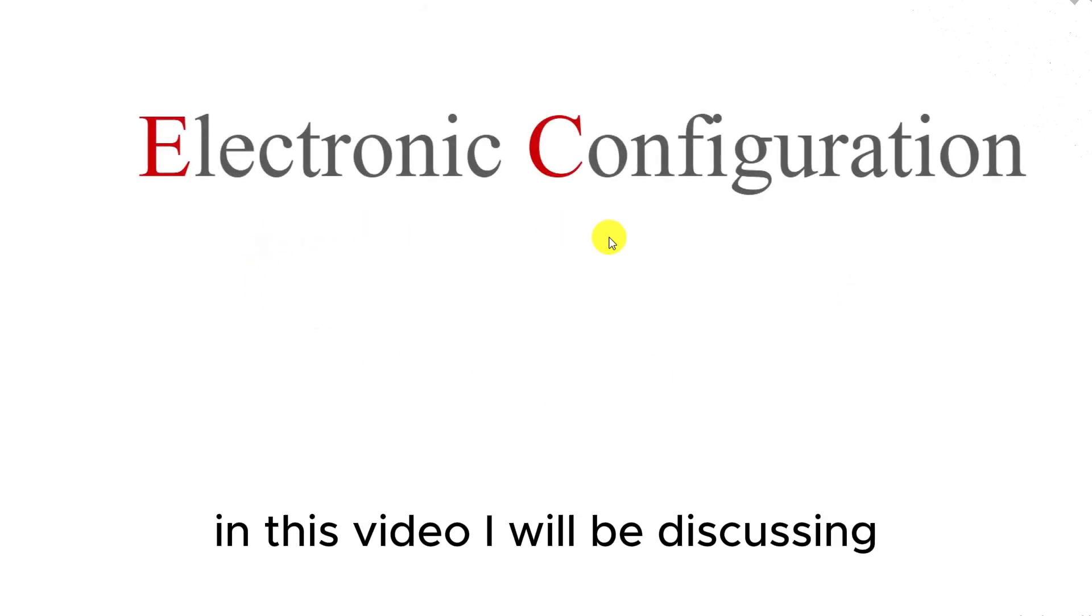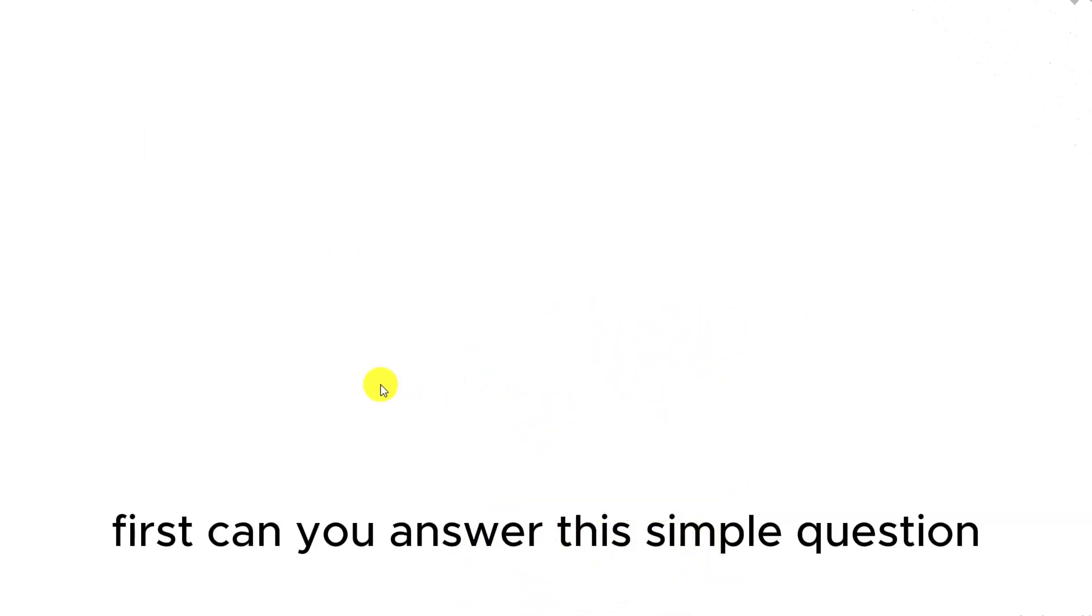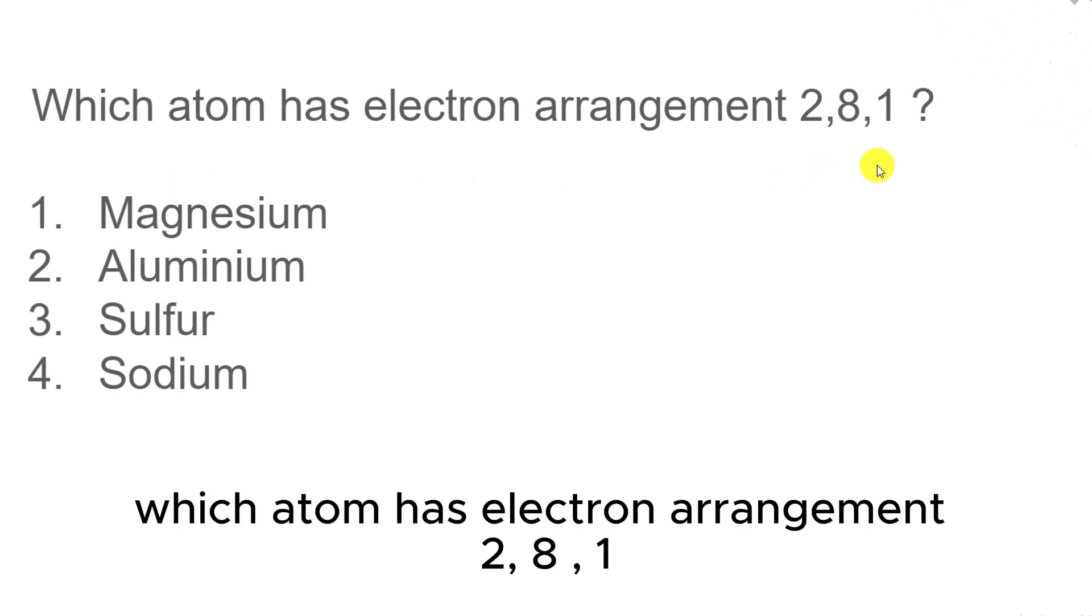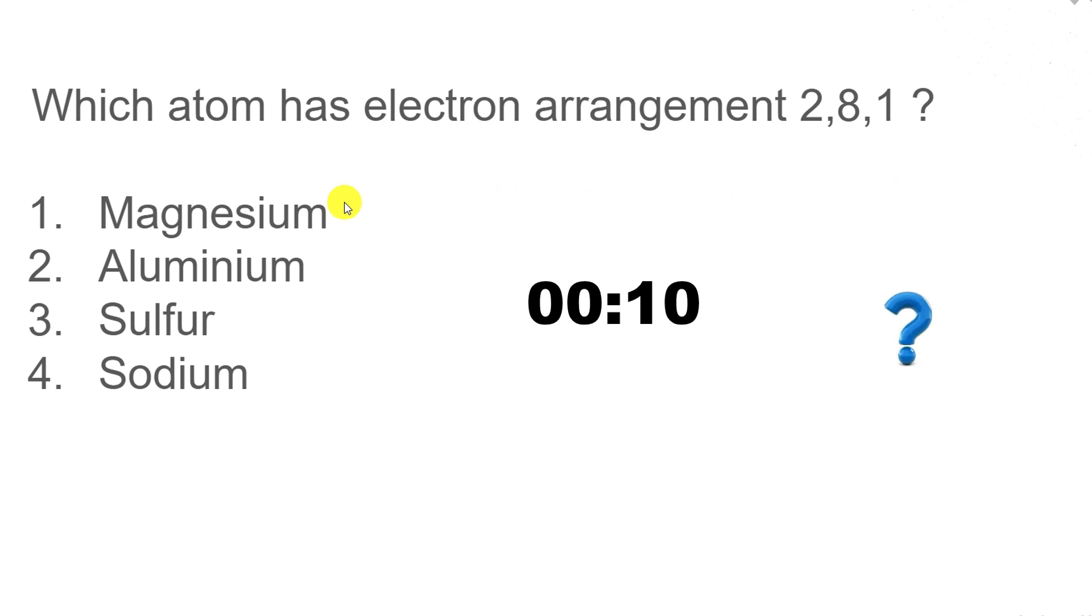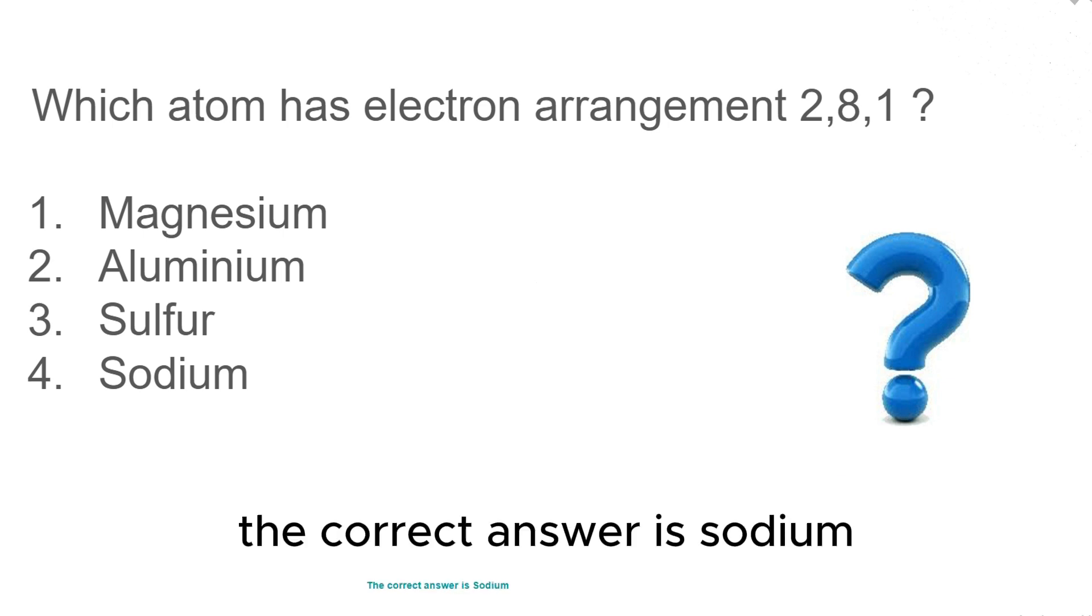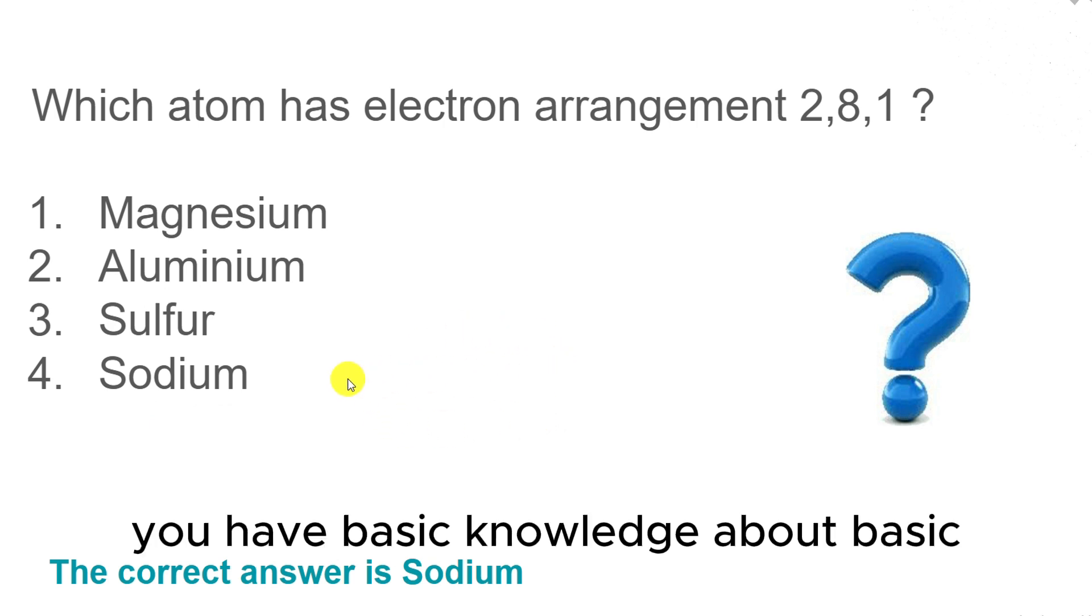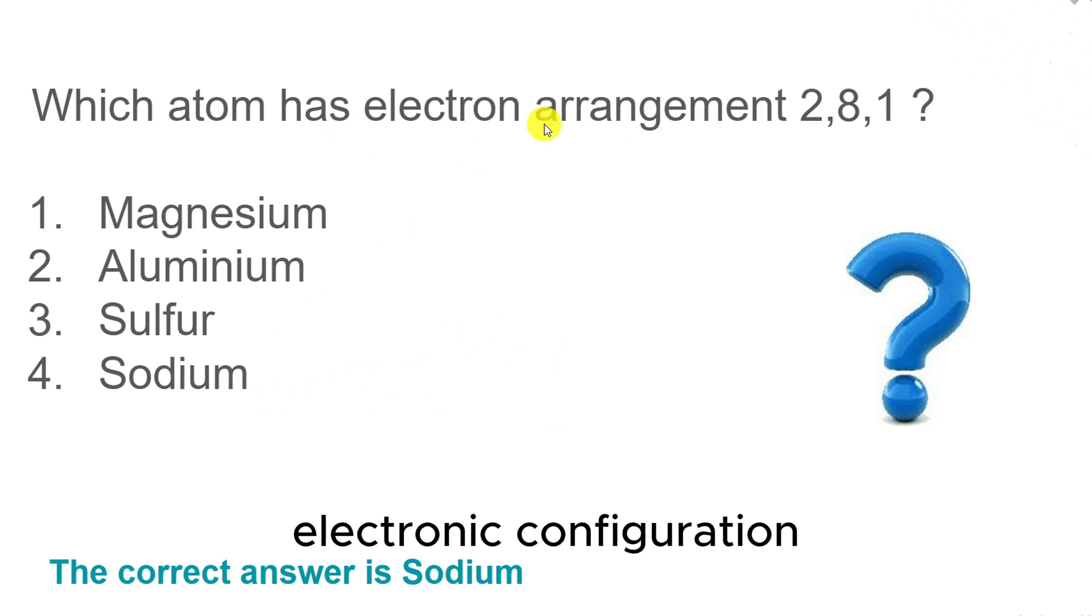In this video I will be discussing how to find out the electronic configuration of atoms. First, can you answer this simple question? Which atom has electron arrangement 2,8,1? If you got the answer correct, you have basic knowledge about electronic configuration.